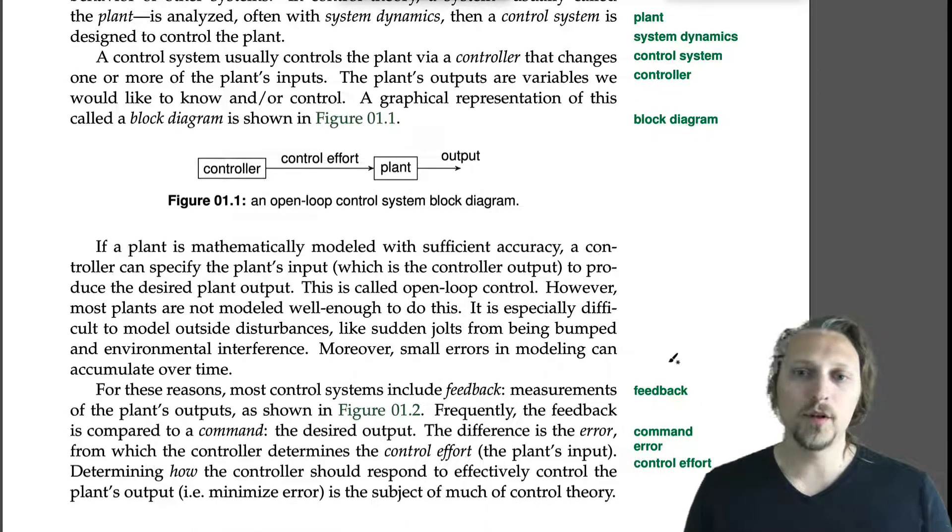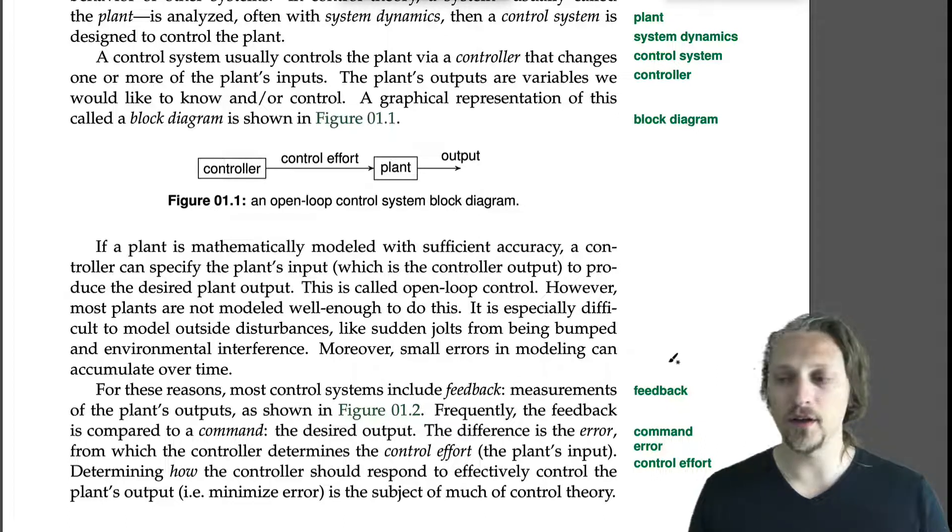This is called open loop control. However, most plants are not modeled well enough to do this. It is especially difficult to model outside disturbances like sudden jolts from being bumped and environmental interference. Moreover, small errors in modeling can accumulate over time.